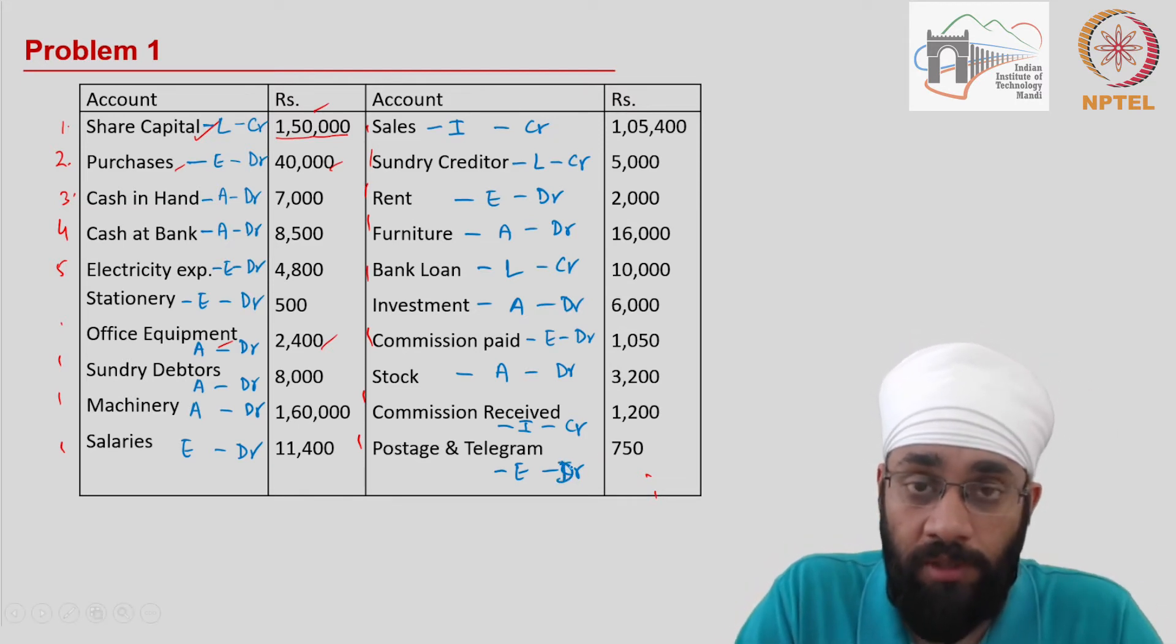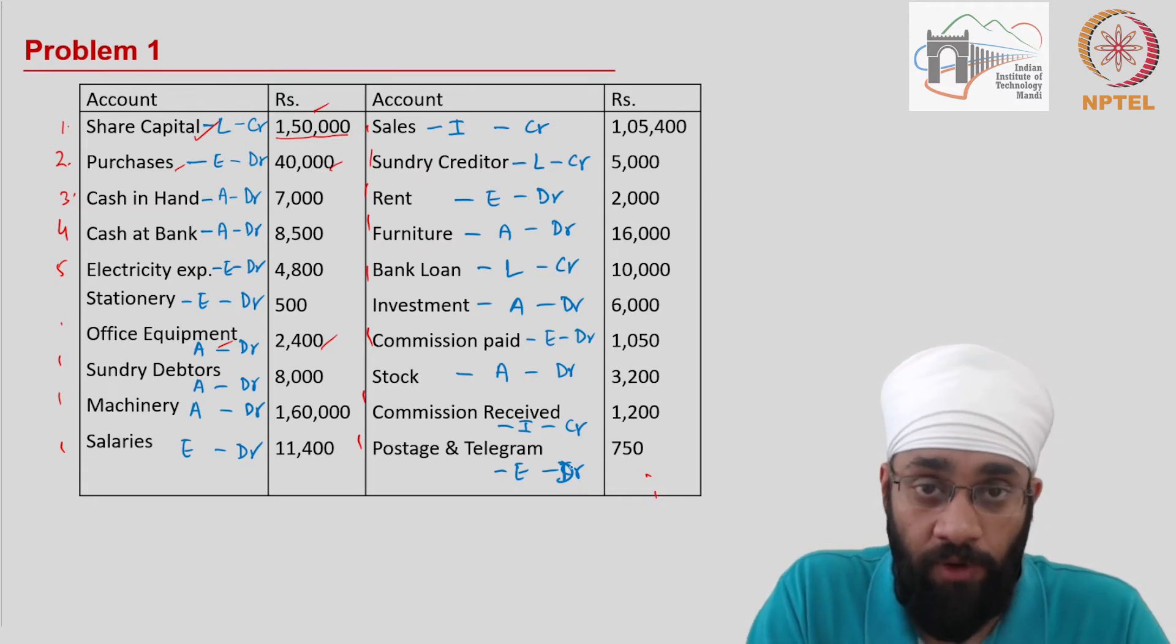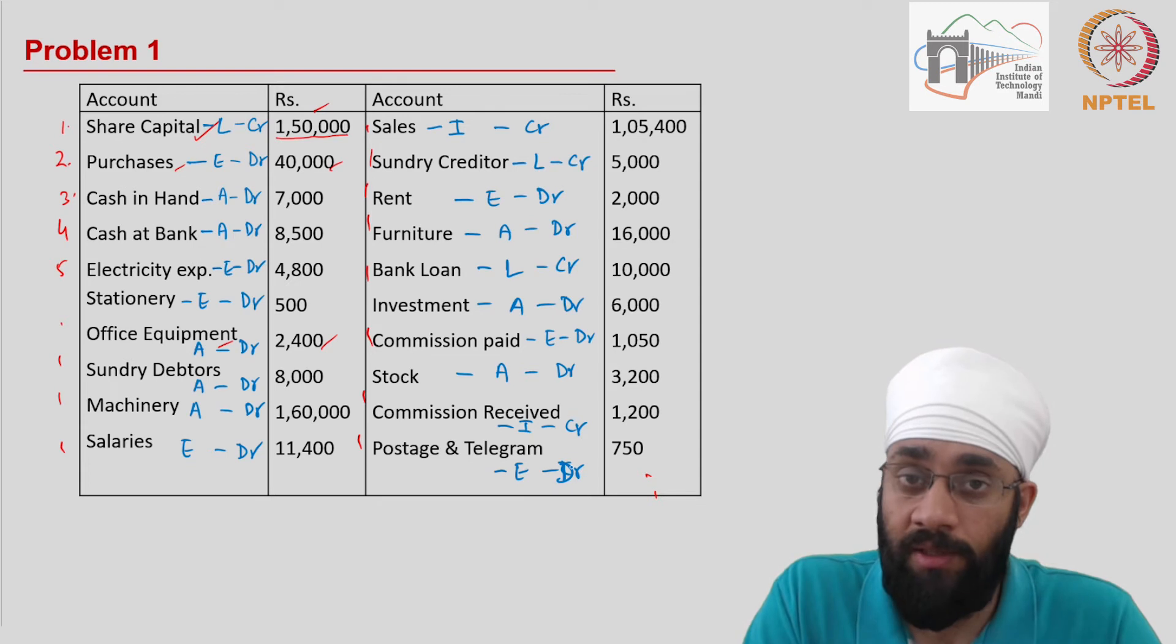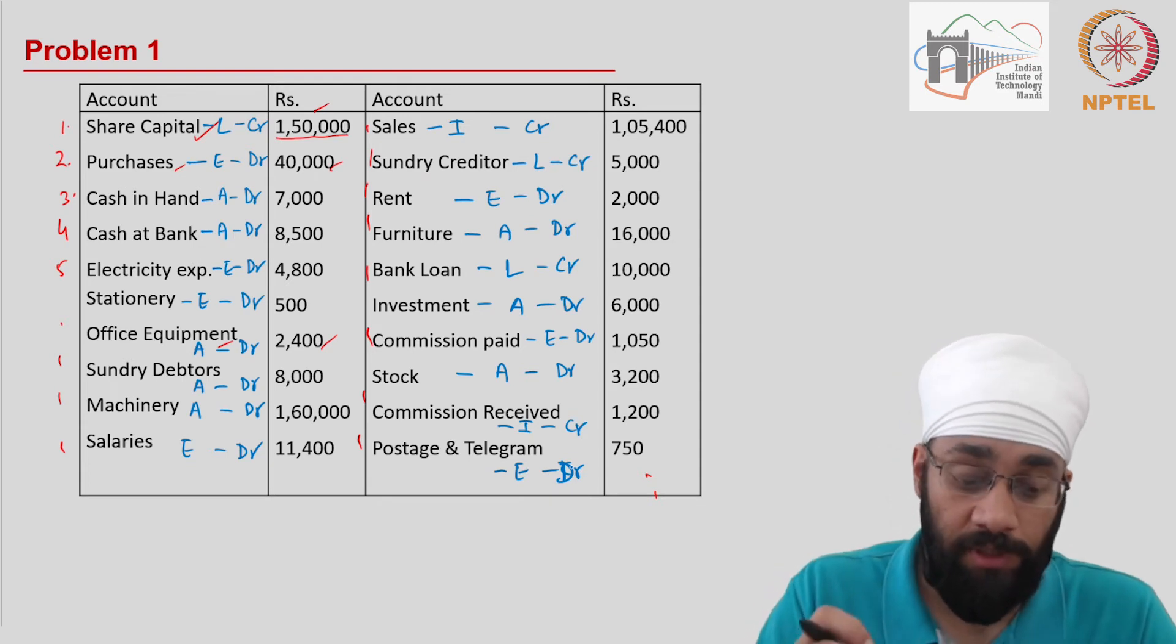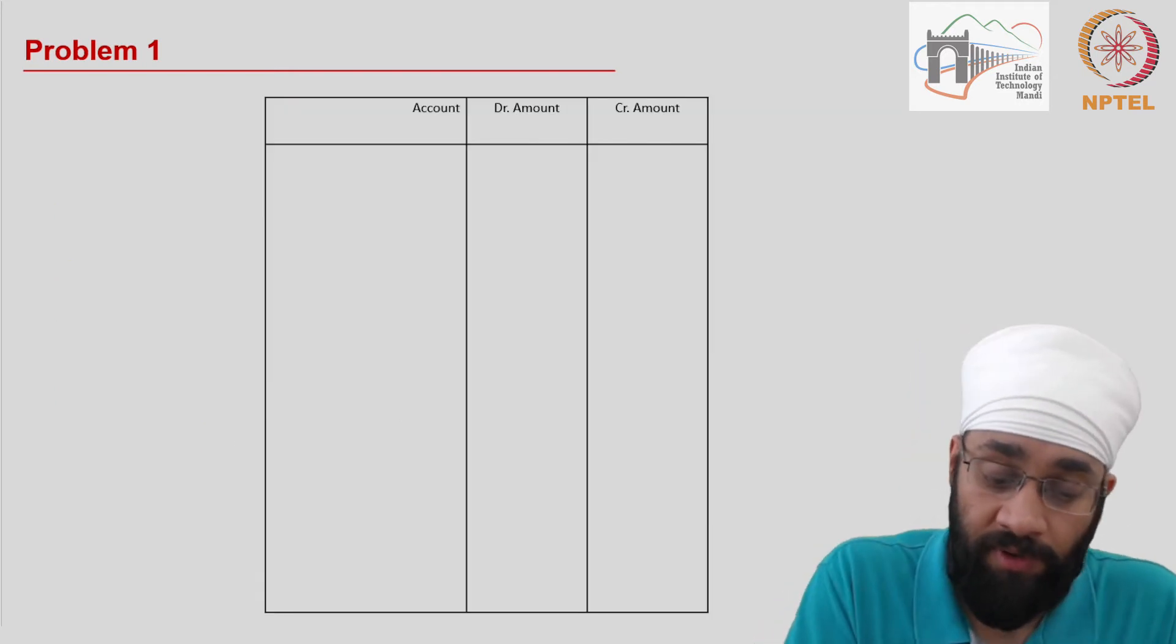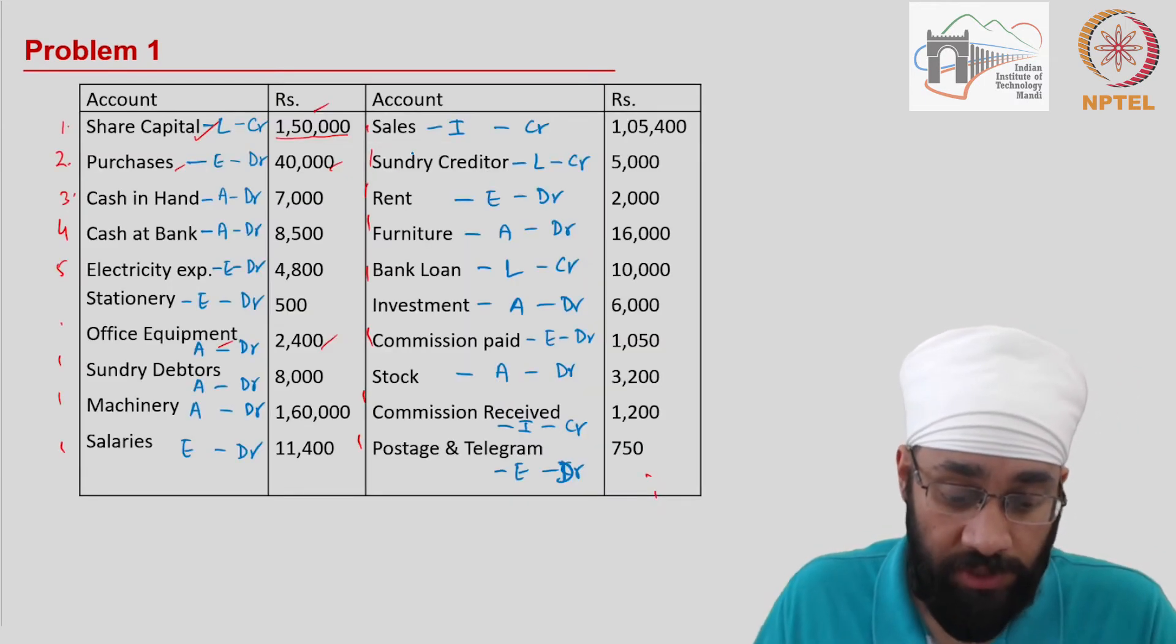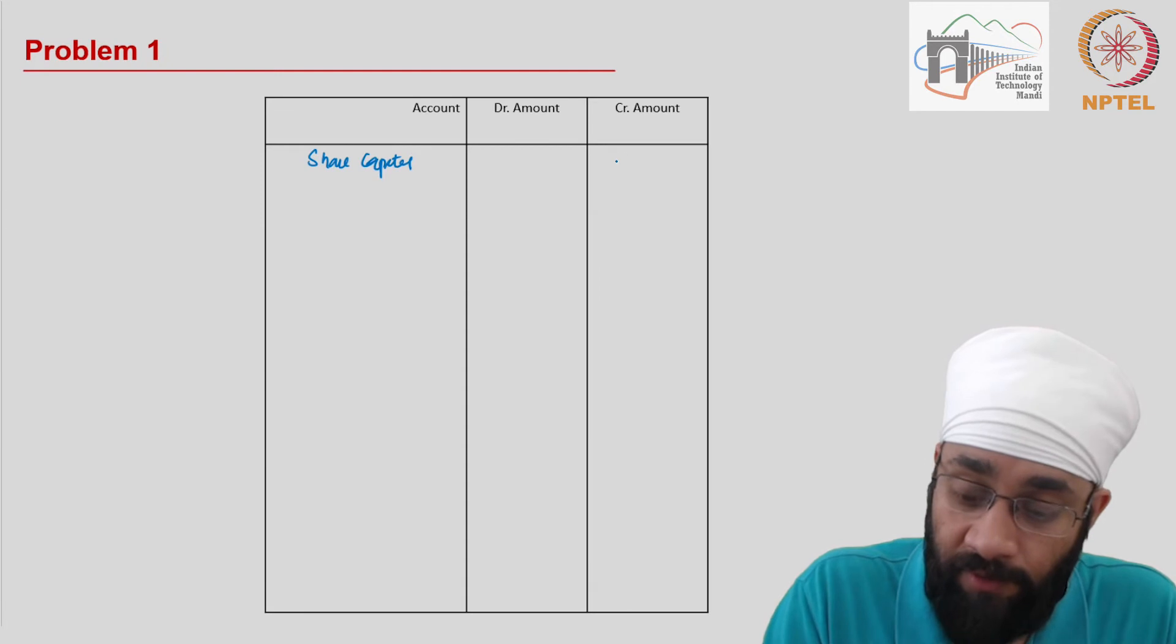If you know which item is an asset, liability, income, or expense and what balance the account will have, you are set. There is not much to do in preparing the trial balance statement. All we have to do now is bring these balances to the trial balance. I'm going to write them one by one. You have share capital which is a credit balance, $150,000.